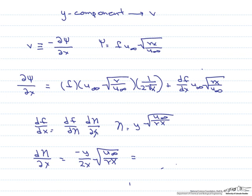Or if we simplify it, it equals minus eta over 2x. So now let's put everything together.